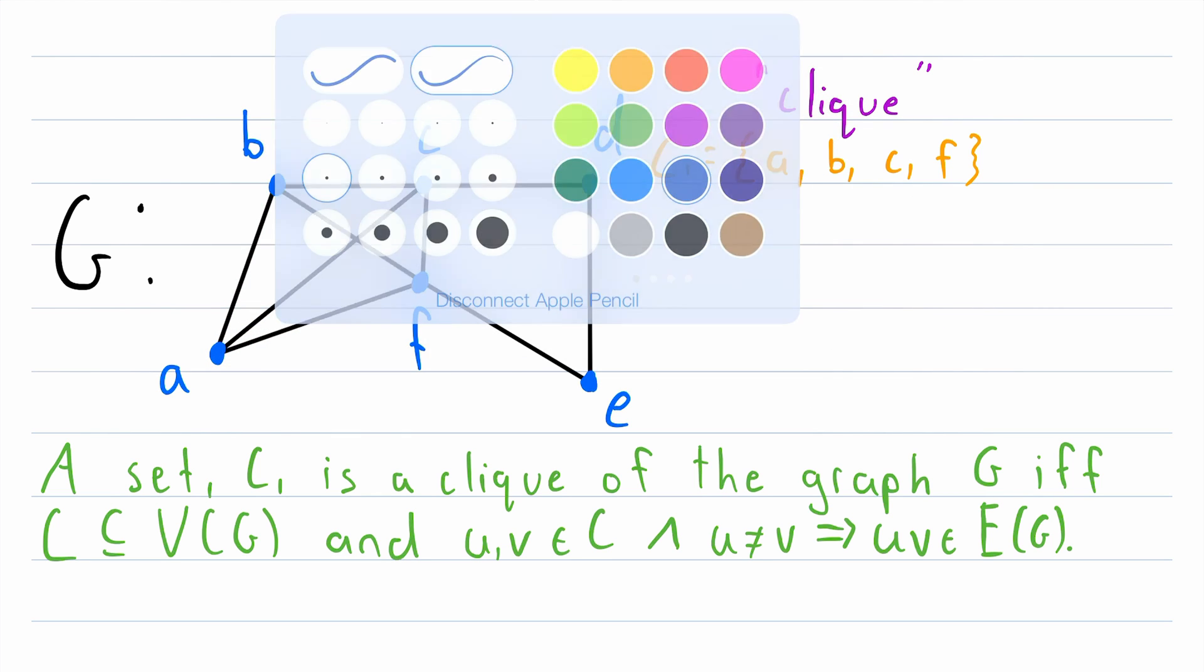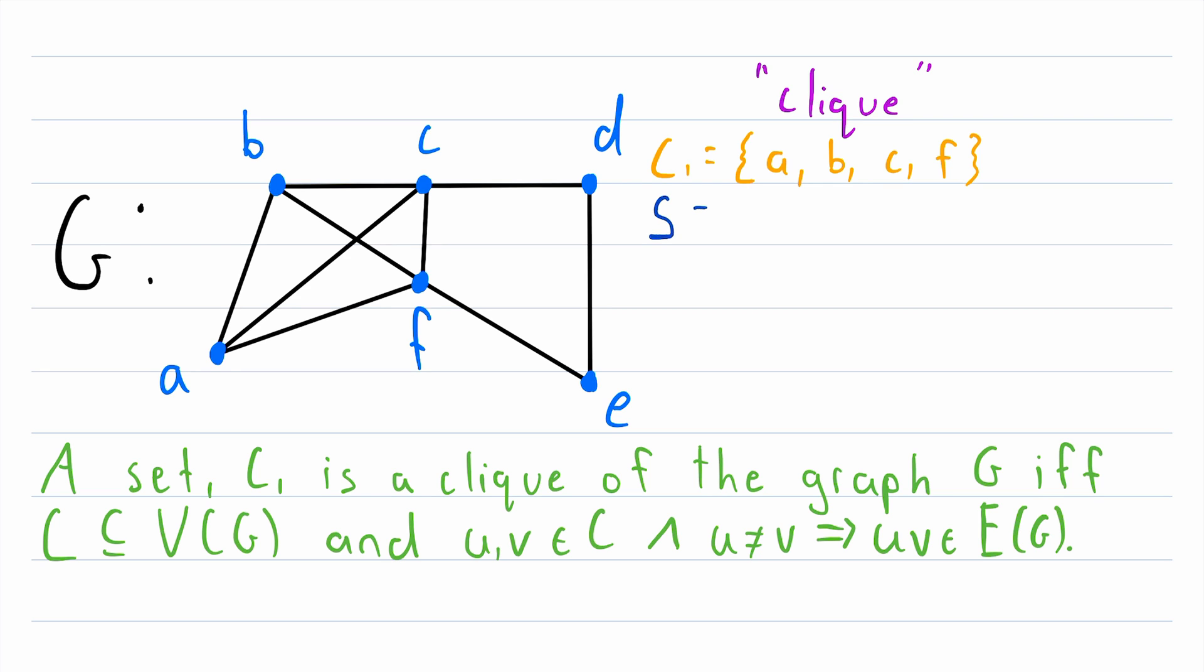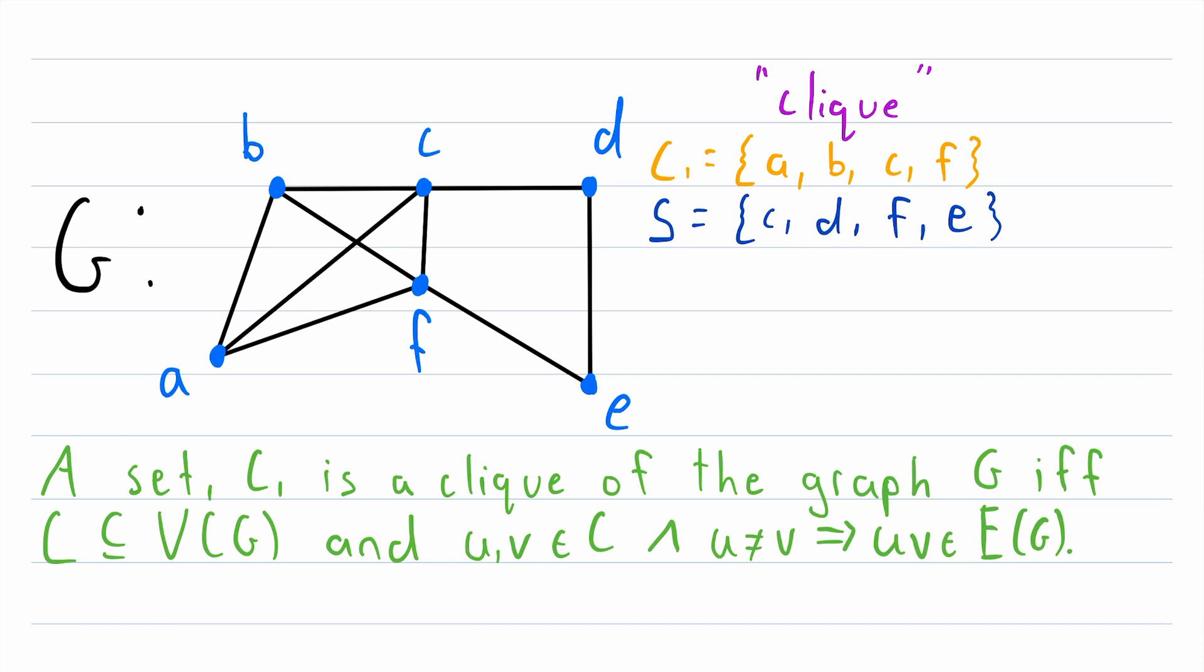So that's well and good. Let's look at a non-example now. We'll just call this vertex set S. And let's say it includes C, D, F, and E. This is not a clique. Although it is a subset of the vertex set of G, not every pair of distinct vertices in this set is adjacent. For example, the vertex C and the vertex E, we see that these two vertices are not adjacent in the graph. So this is not a clique. The subgraph induced by this vertex set is not a complete graph.